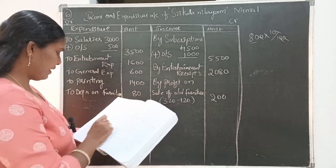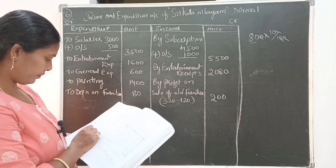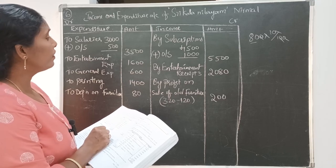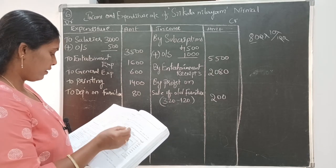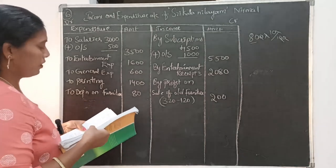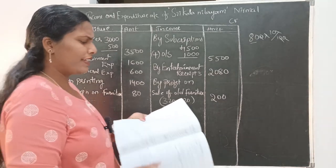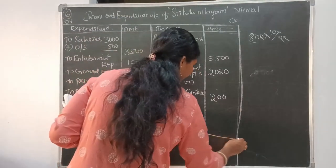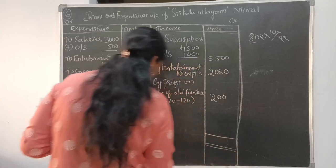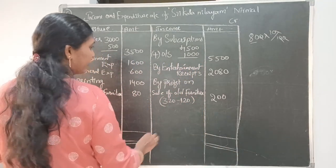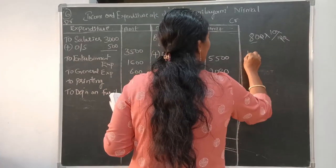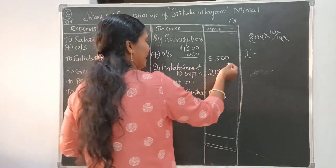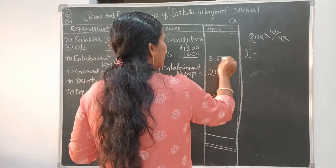Checking if anything is left — depreciation is provided and outstanding salaries are also accounted for. So this is a very simple and easy problem. Now make the totals. I am closing the account, so simply make the totals. Start with the income side first.